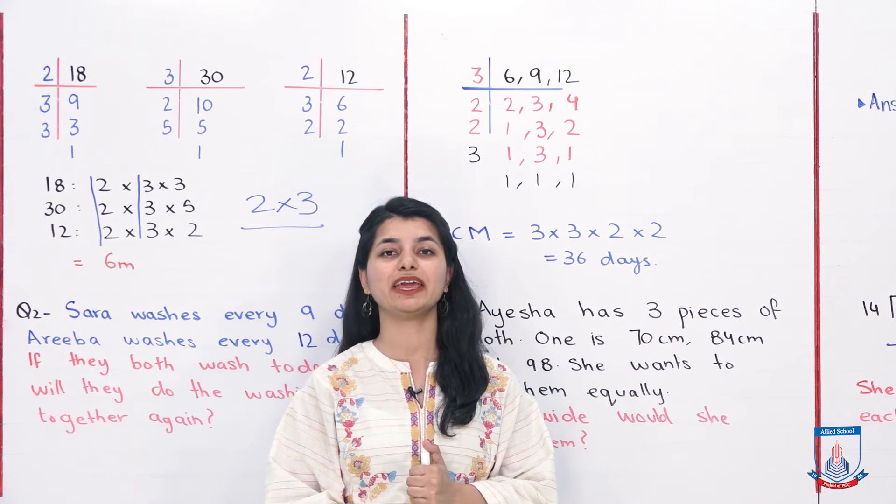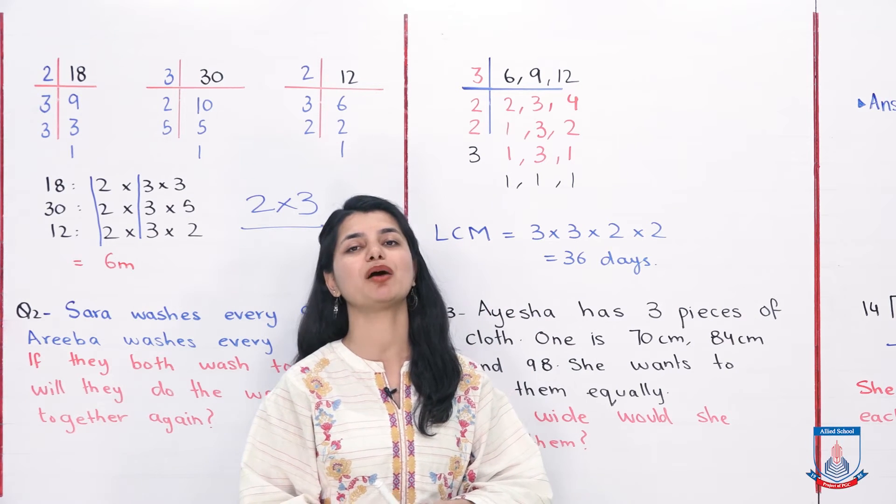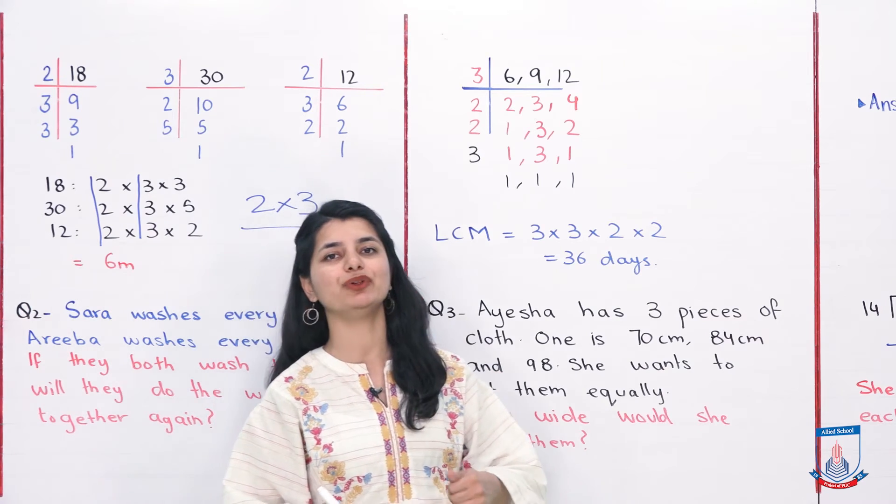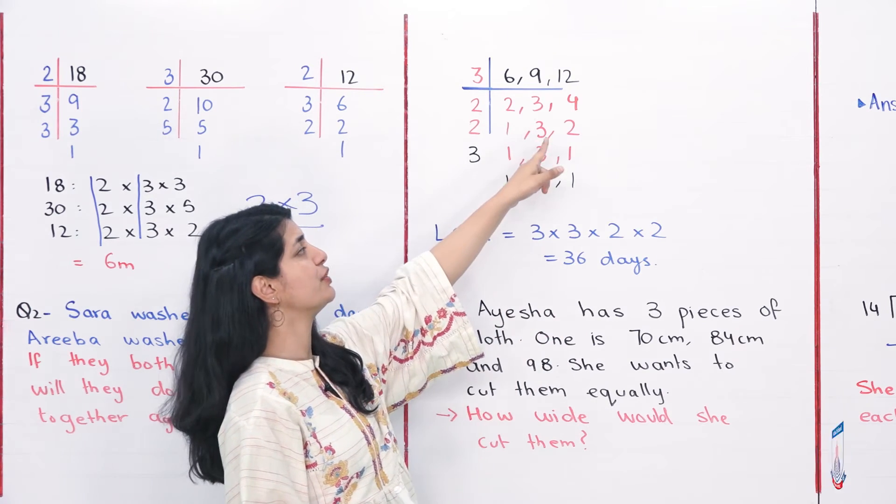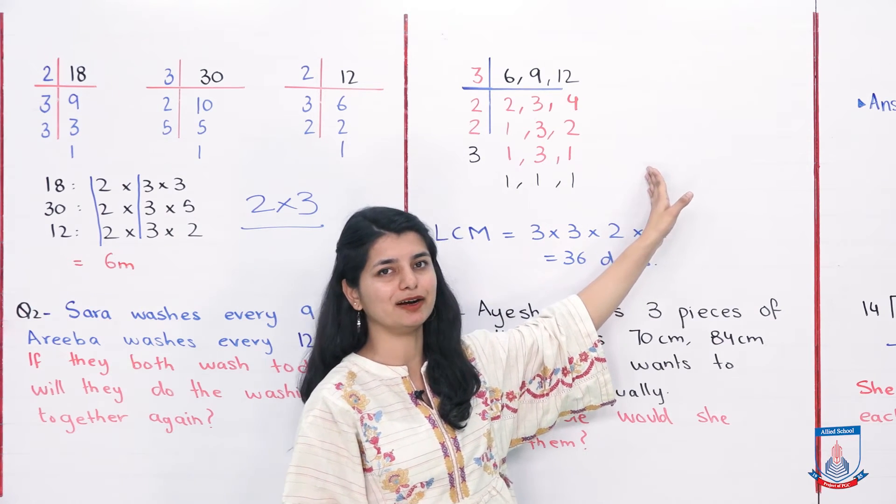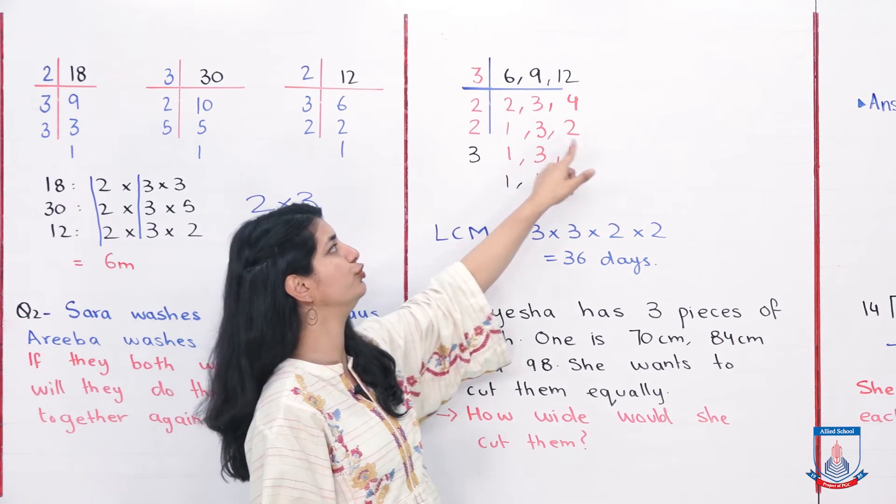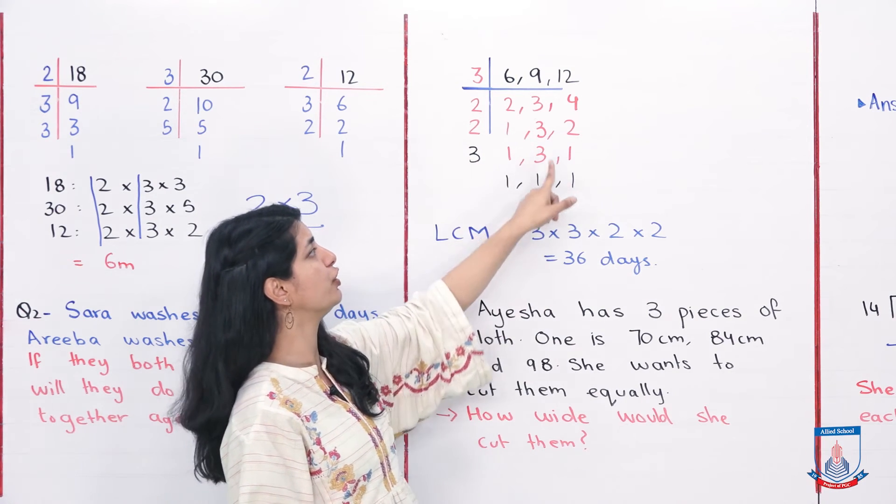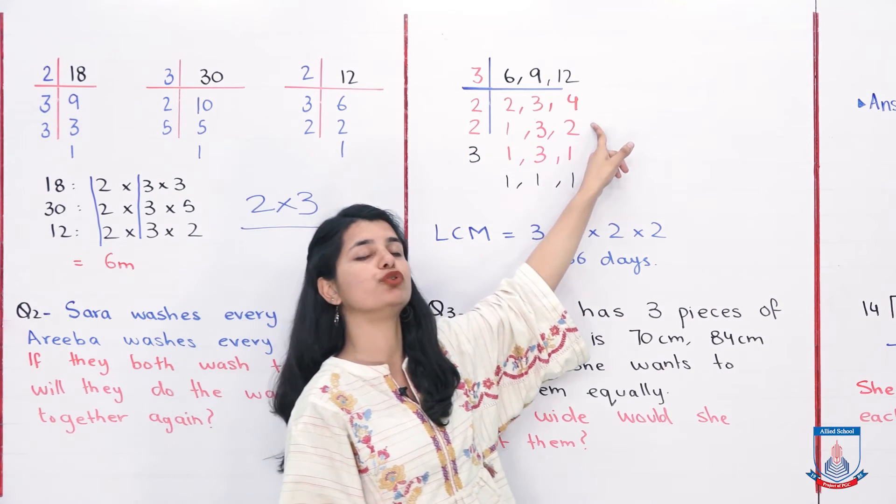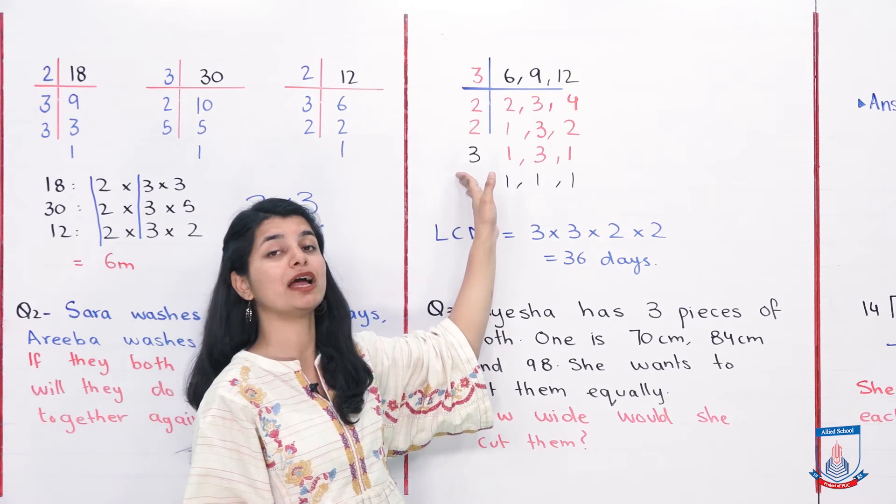Now we have to see that for the 3 different days—6 days, 9 days, and 12 days—what is their lowest common multiple. First of all, these three are divided by 3. 3 times 2 is 6, 3 times 3 is 9, 3 times 4 is 12. Next, I will factor 2 from the remaining numbers. 2 times 1 is 2, 2 times 2 is 4. Then 3 from 3, which is 3 times 1 is 3. And ultimately, 2 times 1 is 2. This will become my entire prime factorization answer.